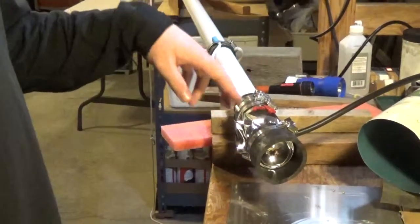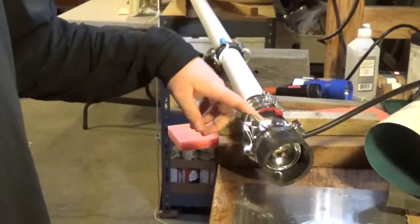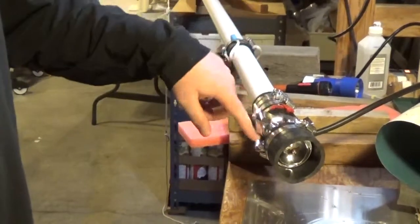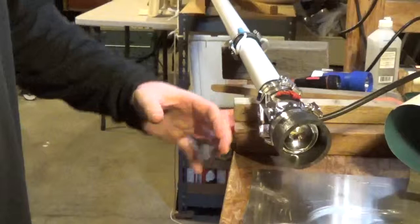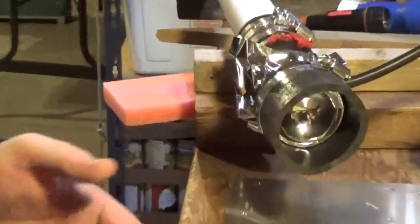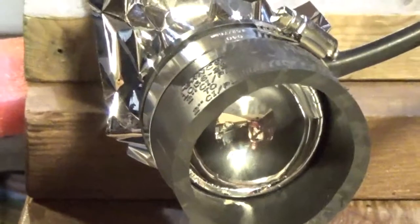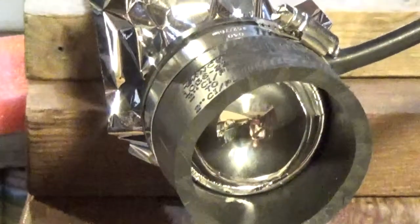As the vacuum continues to evacuate the pipe here, you can see the membrane, or the mylar, caving in, forming a pole shape due to the atmospheric pressure pushing in.